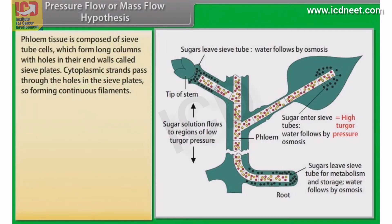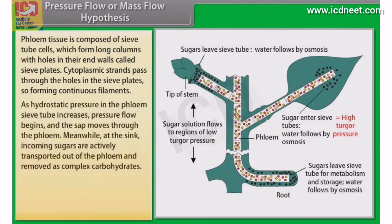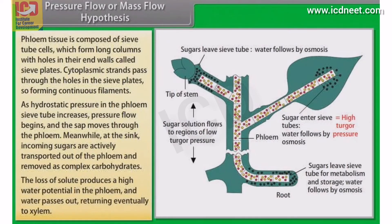Cytoplasmic strands pass through the holes in the sieve plates, forming continuous filaments. As hydrostatic pressure in the phloem's sieve tube increases, pressure flow begins and the sap moves through the phloem. Meanwhile, at the sink, incoming sugars are actively transported out of the phloem and removed as complex carbohydrates. The loss of solute produces a high water potential in the phloem and water passes out.